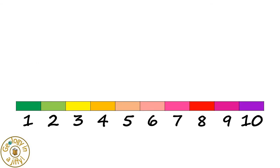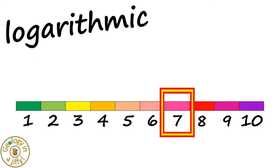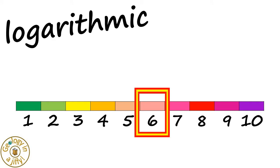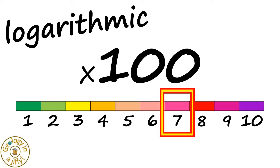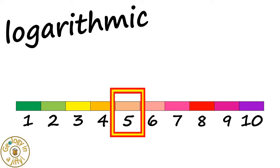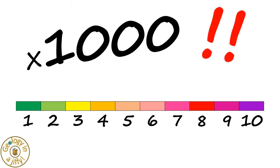For example, a magnitude 7 earthquake is 10 times stronger than a magnitude 6 earthquake, but is 100 times stronger than a magnitude 5 earthquake, and has a thousand times more energy than a magnitude 5 earthquake too. Wow!